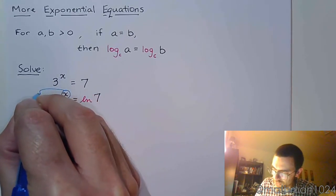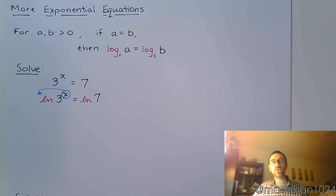So since our variables are up in the power, by using the log and those properties, we're able to write that guy in front.